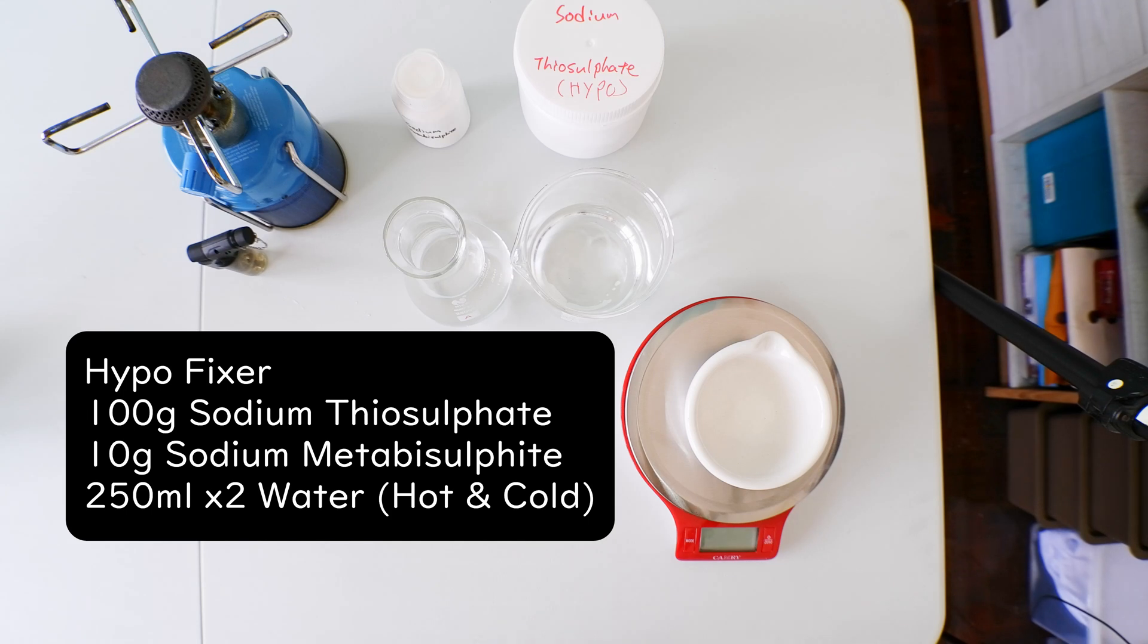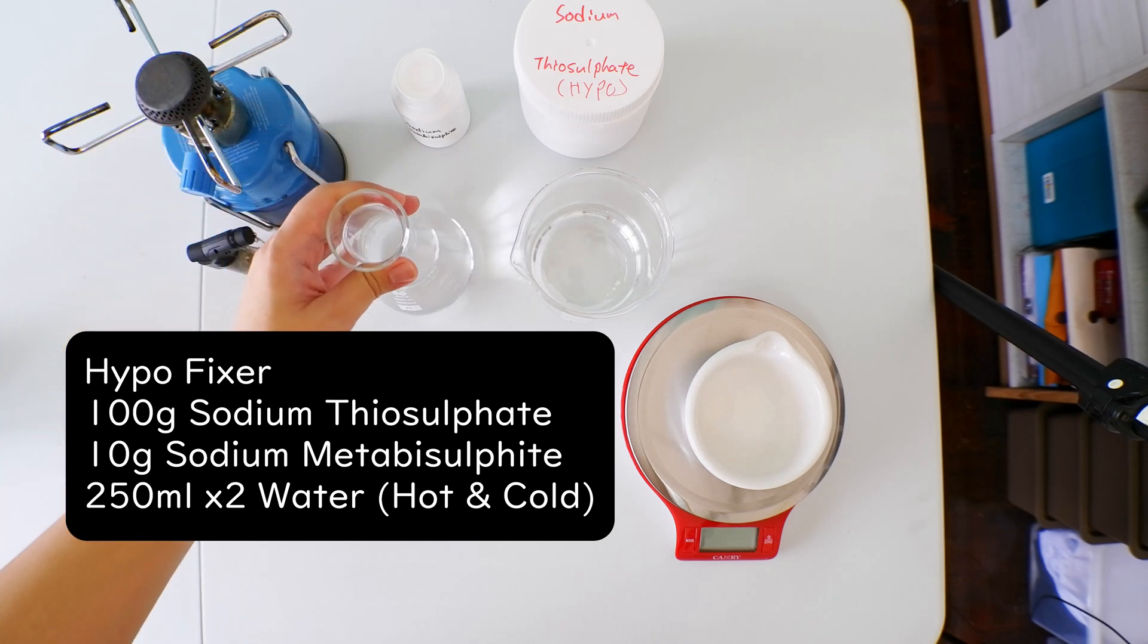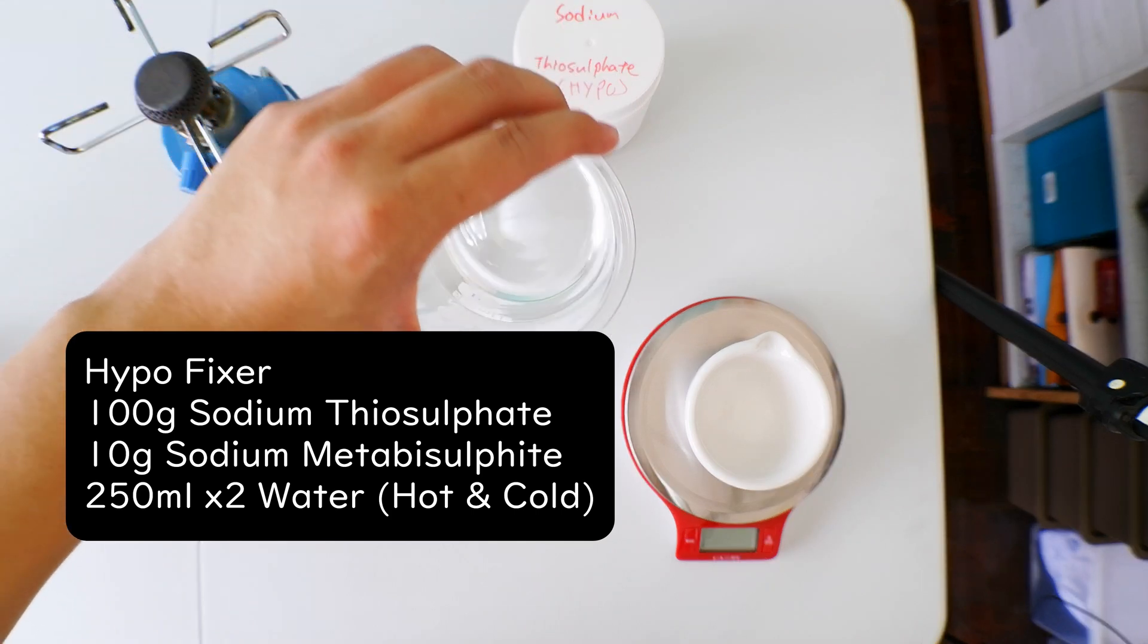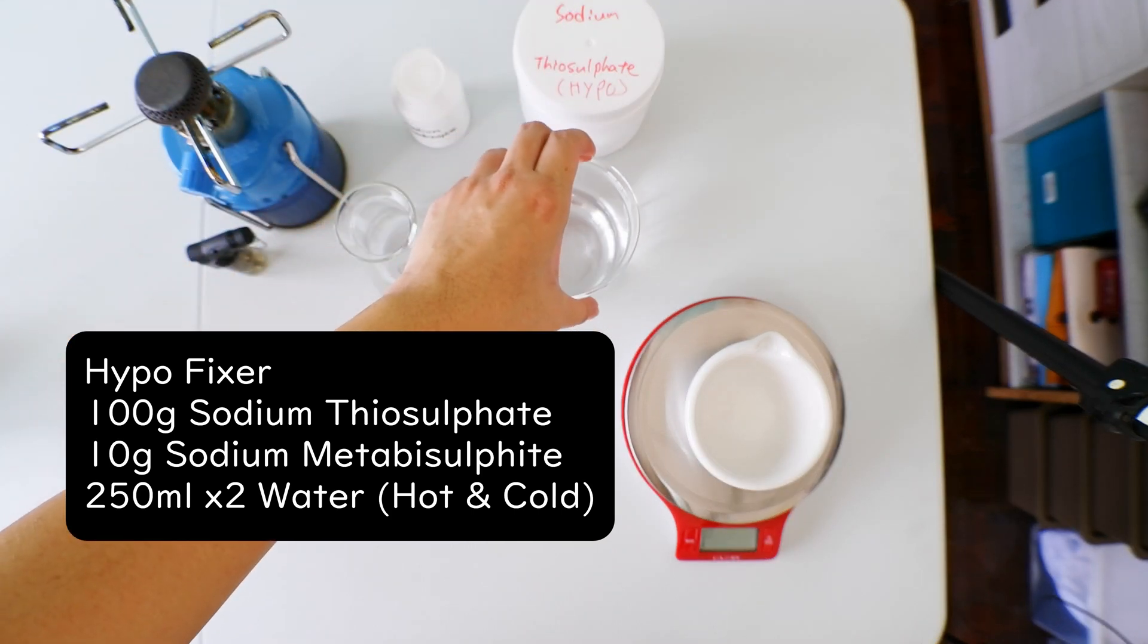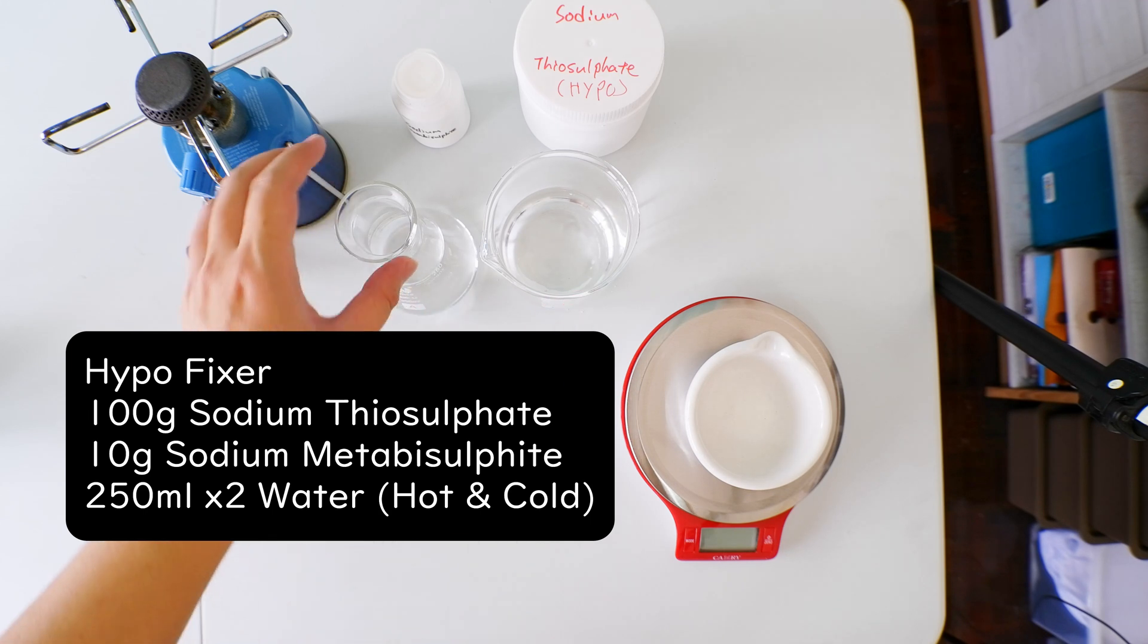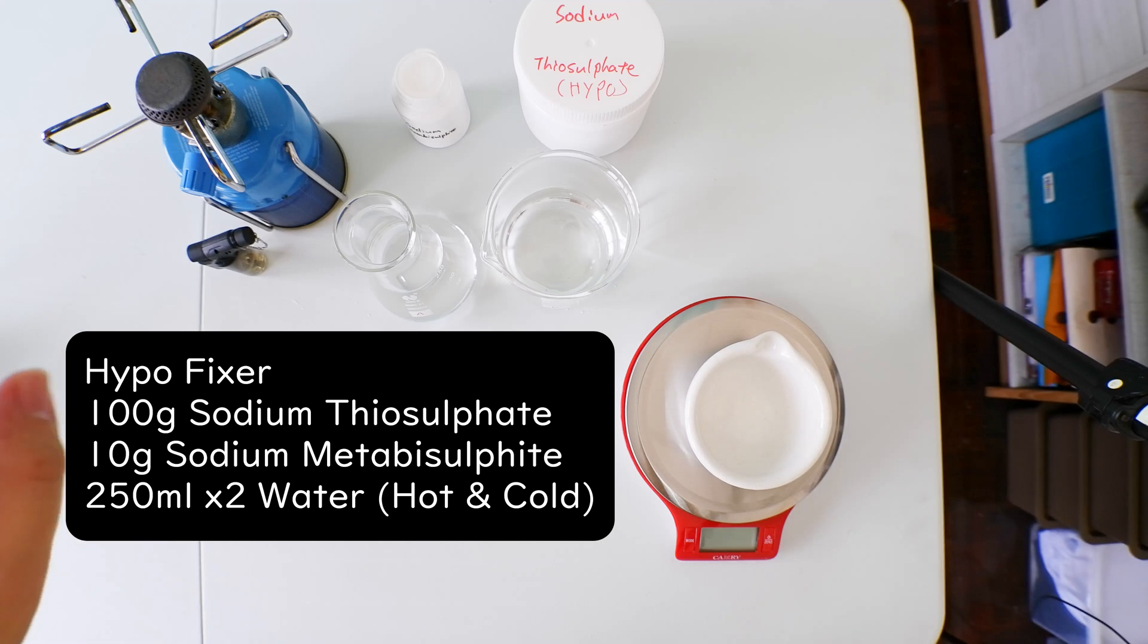You also have to prepare 250 milliliters of water on one side and a little bit more on the other side, because you're going to make 500 milliliters in this recipe. As you've seen here, I've separated it into two different containers.